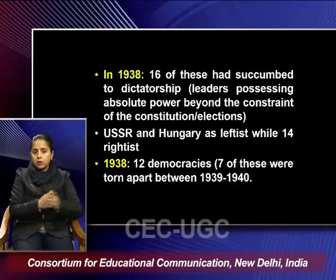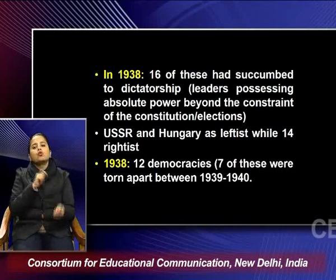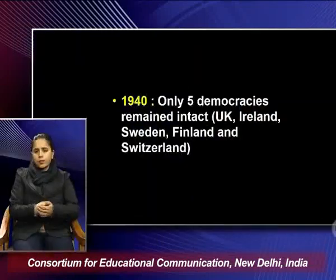In 1938, 12 democracies remained, but seven of these were torn apart between 1939 and 1940 — right at the beginning of the Second World War. This tells you how radicalized — either through left-wing or right-wing politics — the situation in Europe was at the cusp of the Second World War. Of the 12 democracies that had somehow managed to survive the interwar decades, seven were torn apart, and by 1940, only five democracies remained intact.